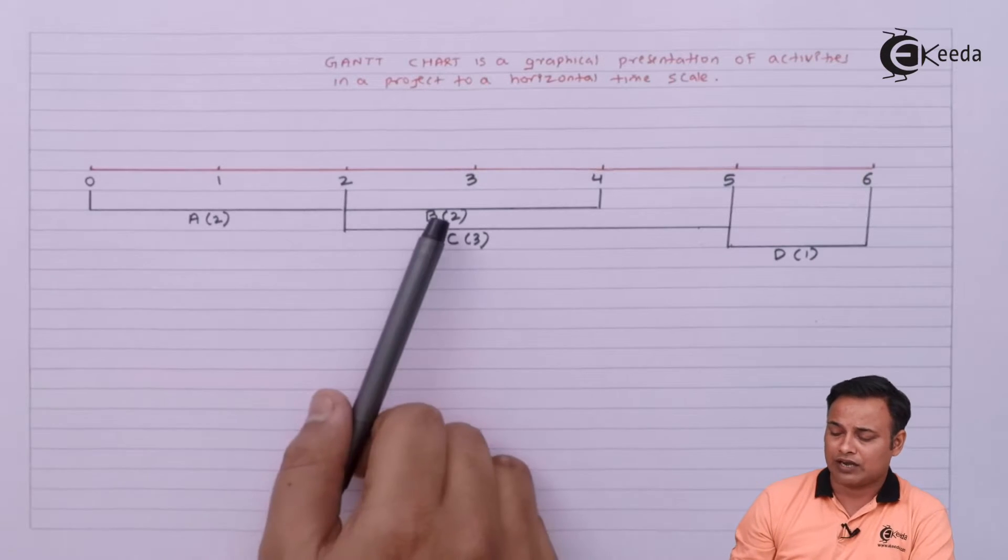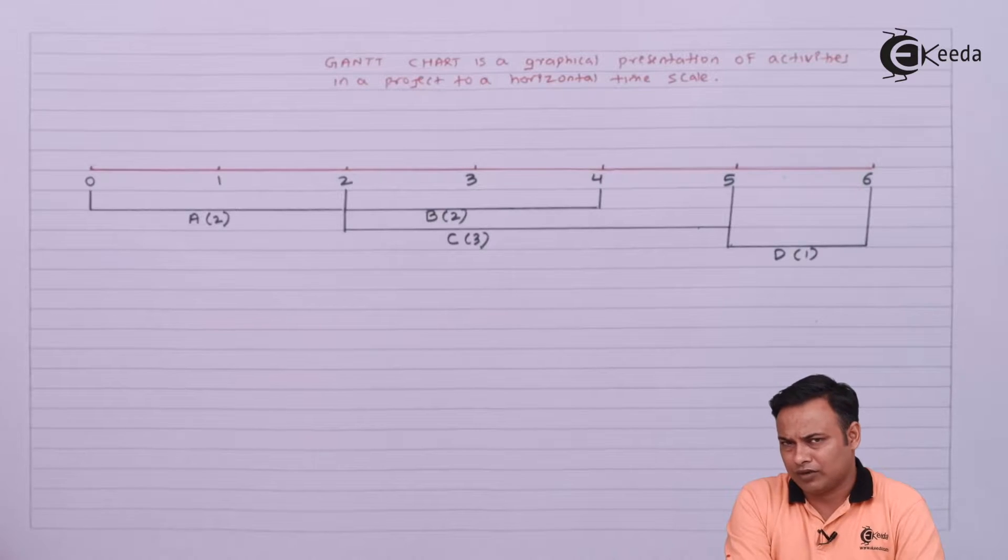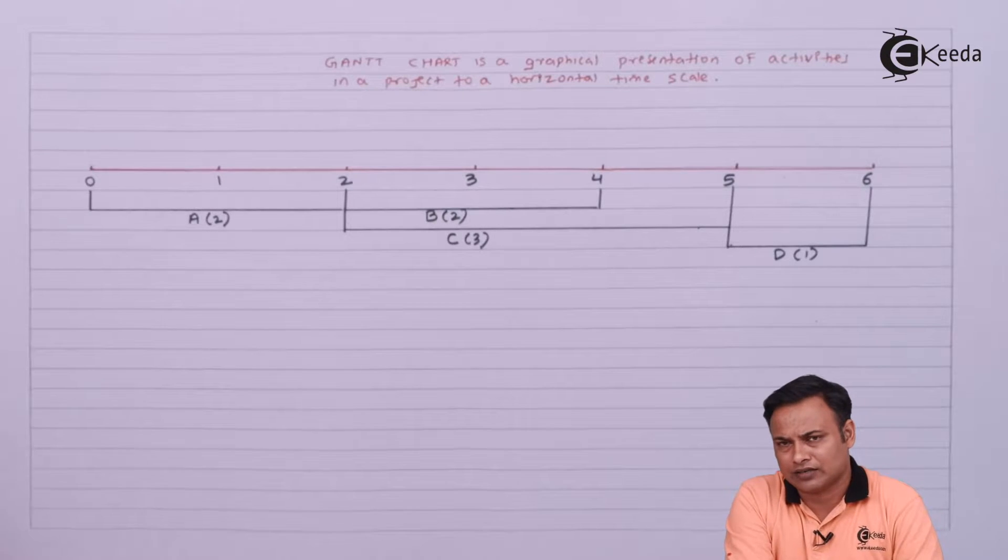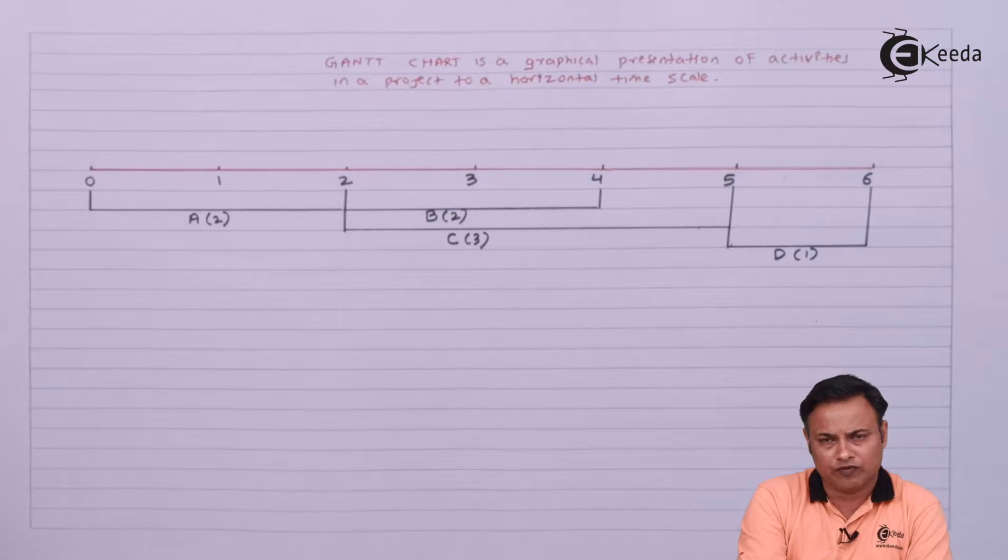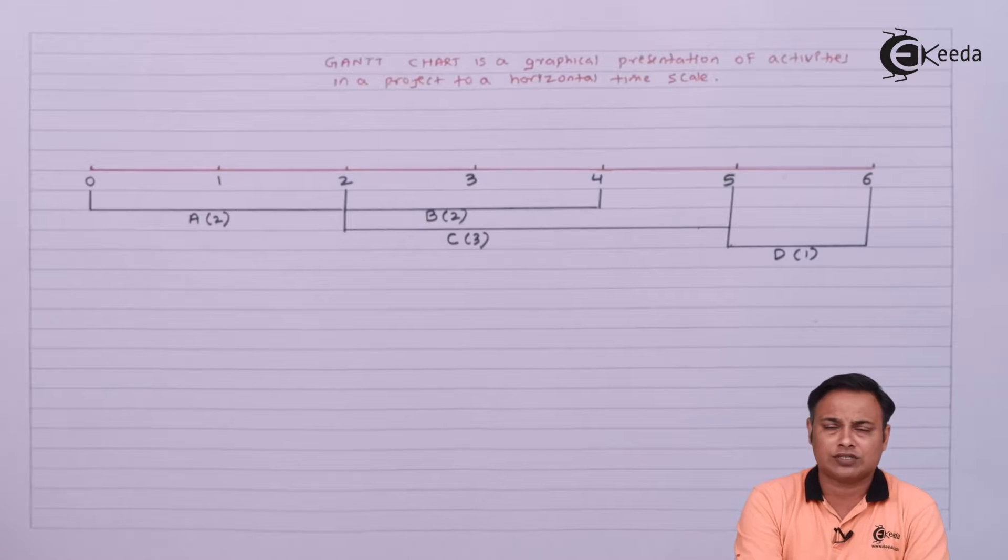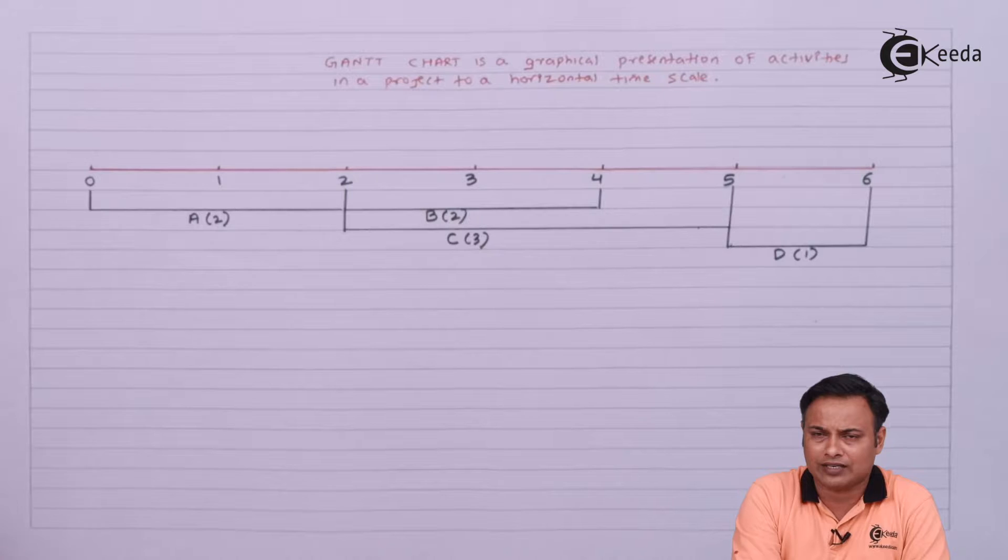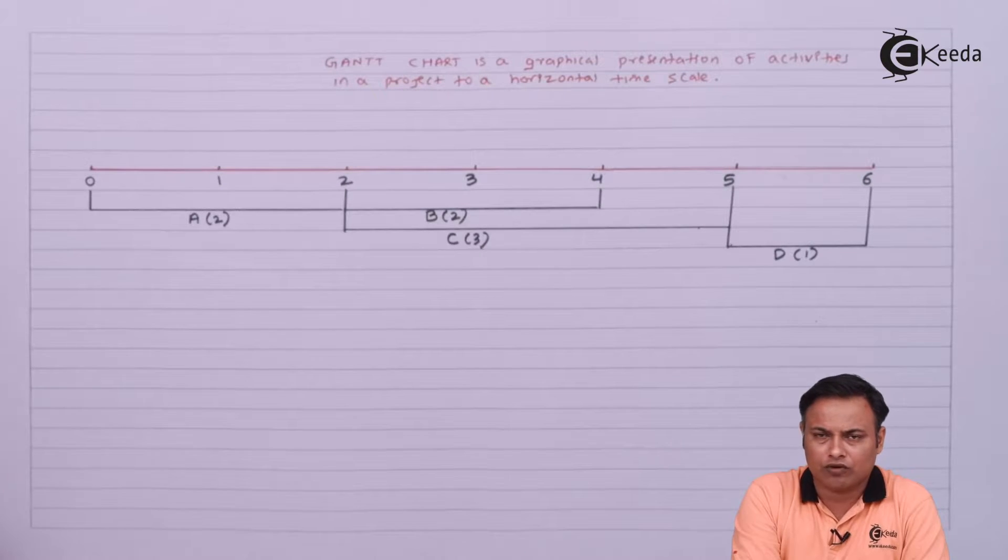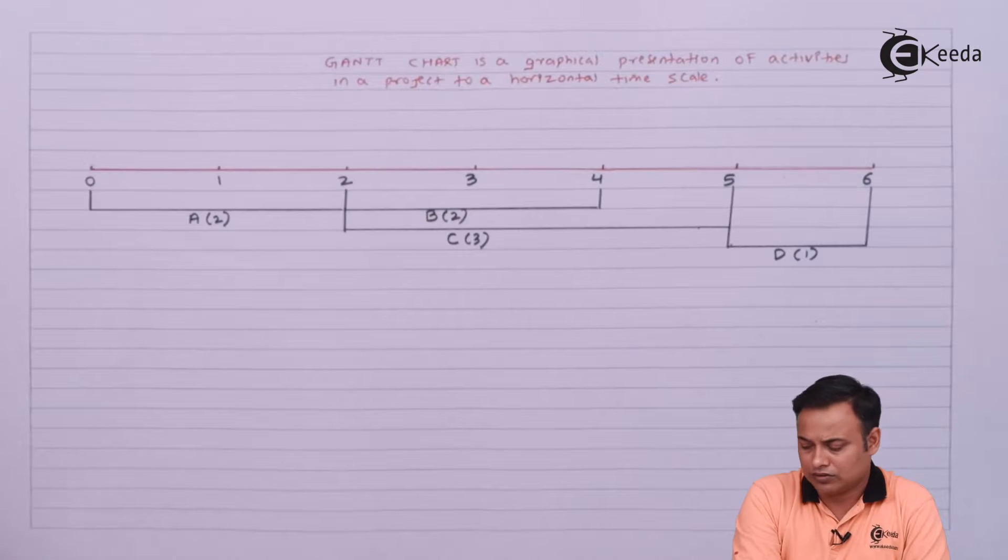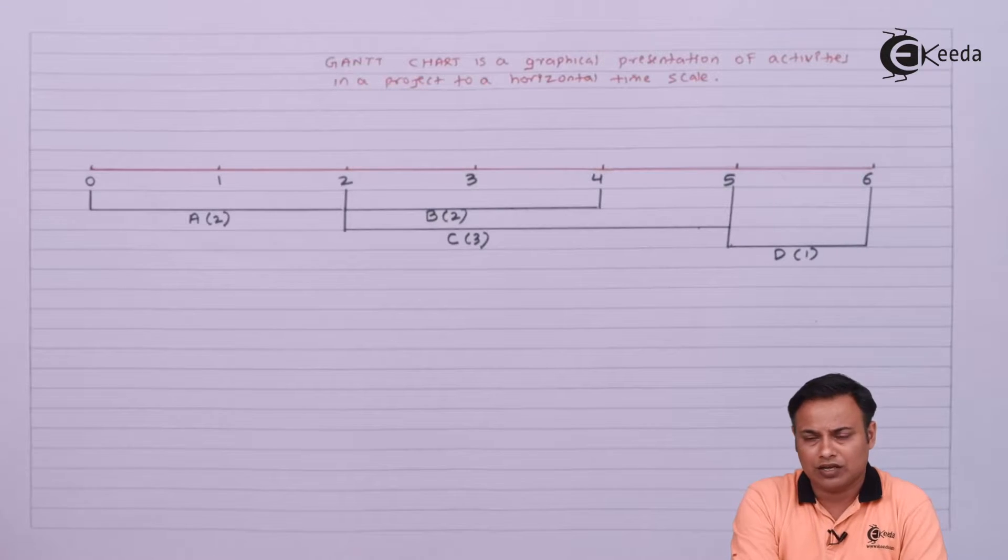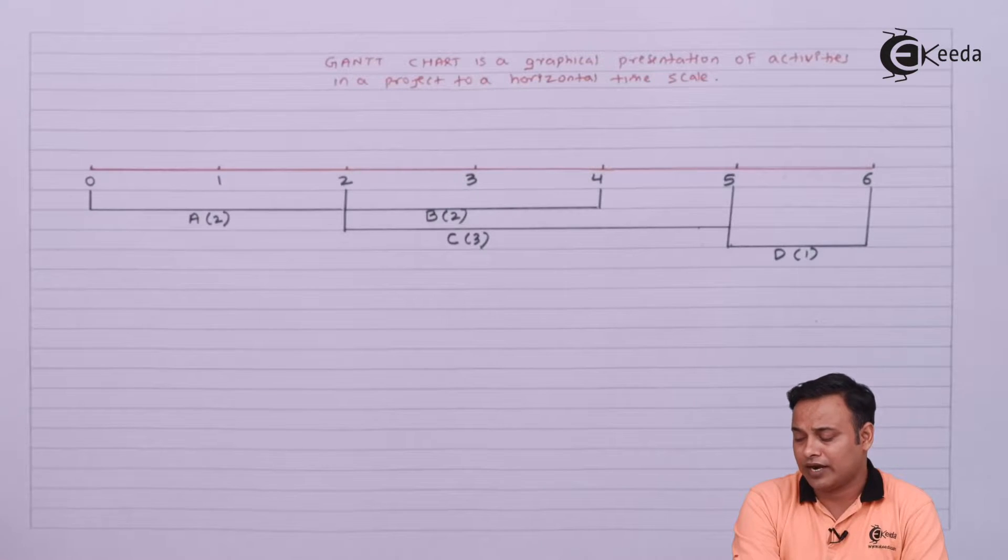But which activity will start after which activity may not be very clear. Second, one cannot ascertain the progress of the activities by looking at the Gantt chart. Gantt chart is very useful before starting operations, but once operations are implemented, the firm may not be able to utilize it to a great extent. Let's solve a problem based on this concept.